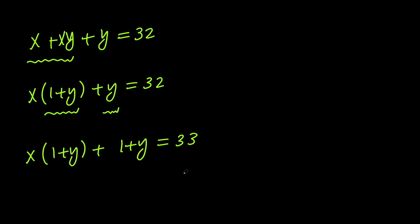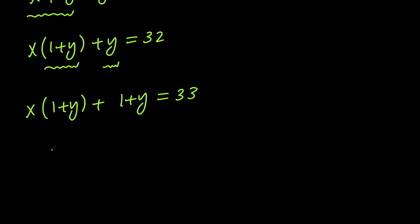Now, if I go ahead and take out 1 plus y, I will have 1 plus y times x plus 1 equals 33.